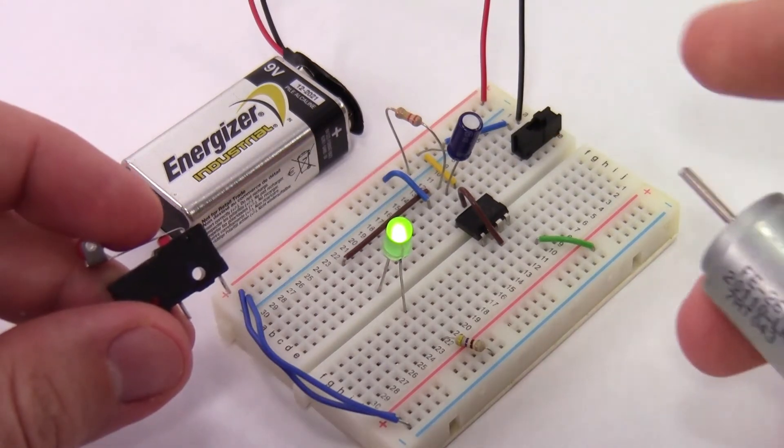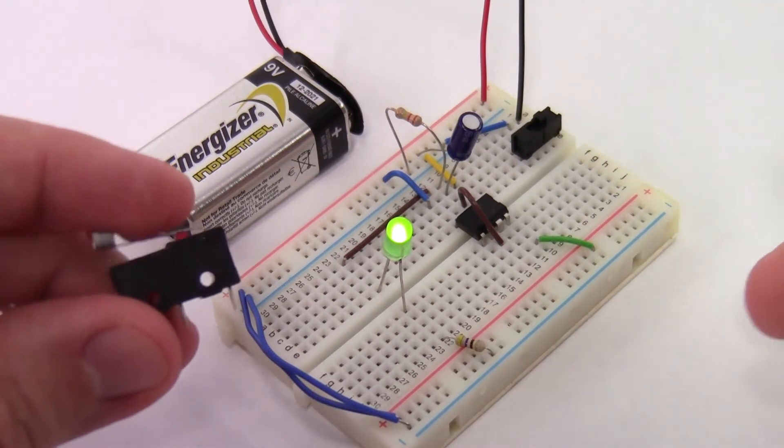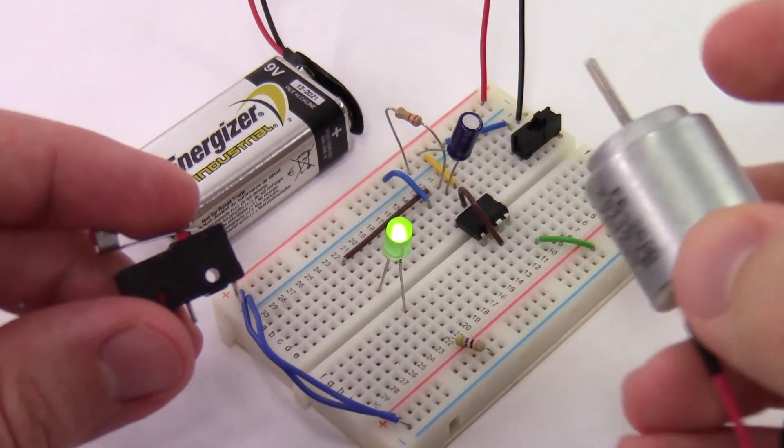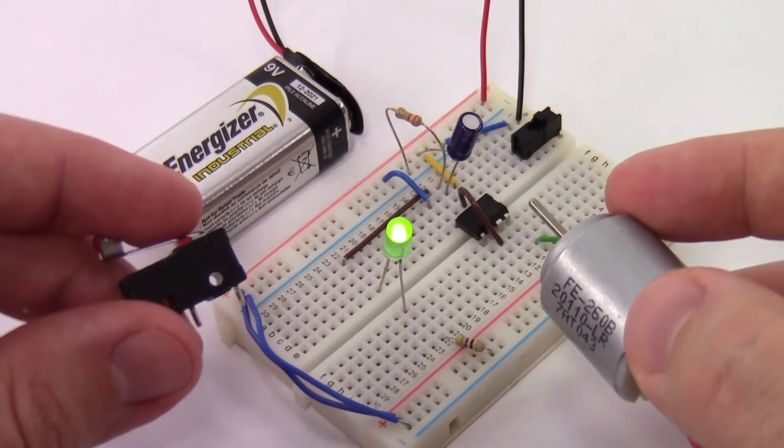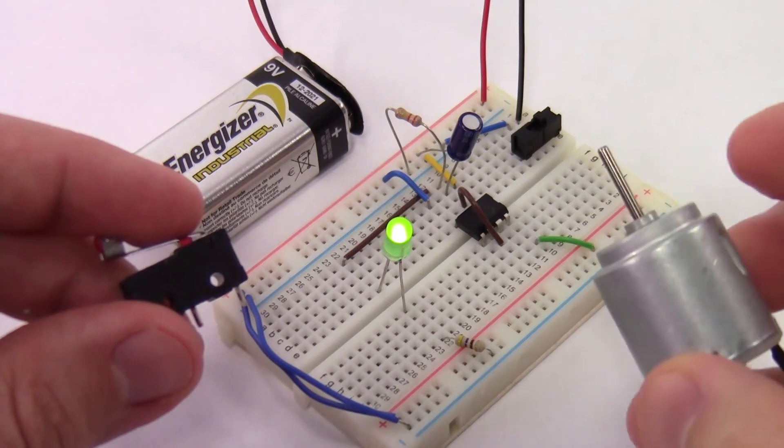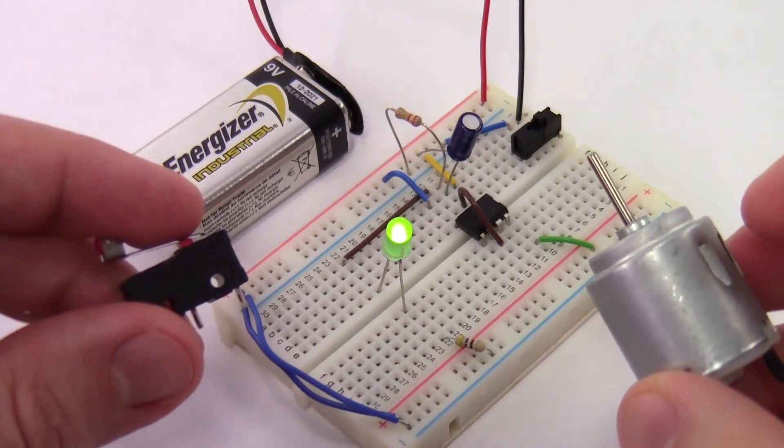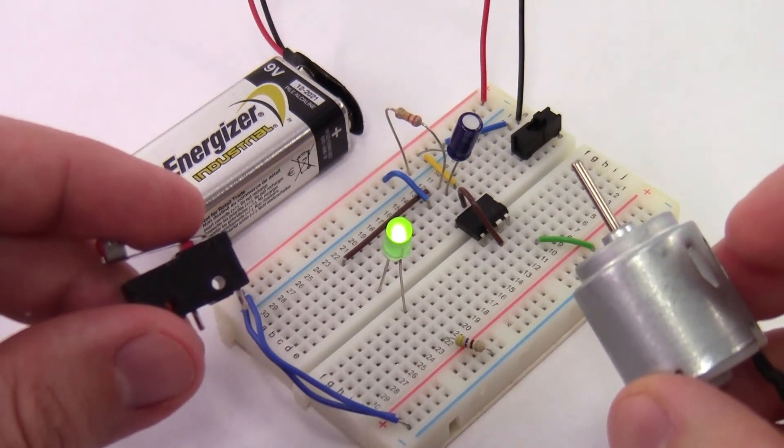For our glitter bomb we'll want to replace this slide switch with a limit switch and this LED with a motor. The only other modification we'll make is that the output of the 555 timer is not really designed to drive a motor directly. That requires too much current so to do that we'll use a transistor.